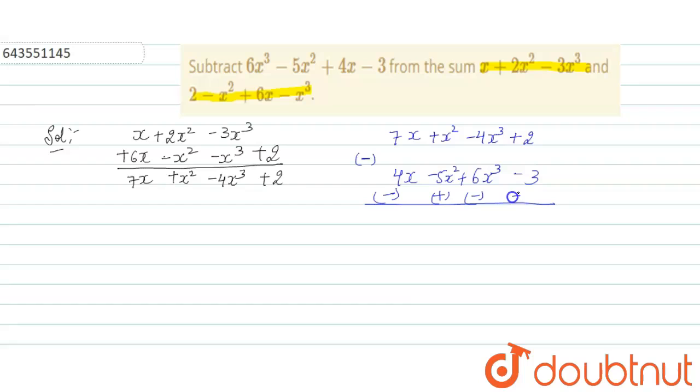So 7 minus 4 is 3x + 6x² - 10x³ + 5. Right?